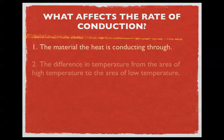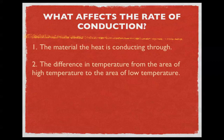The second factor is the difference in temperature from the area of high to low. If the temperature drops outside very quickly, the heat inside your house is going to pass faster through the window to the outside. The whole point is that nature always wants to balance — if there's high temperature on one side and low temperature on the other, it's going to try to even it out, and the bigger the difference, the quicker it wants to happen.